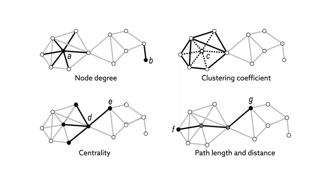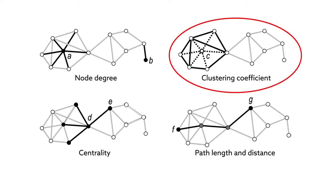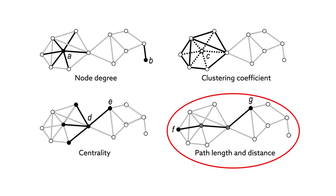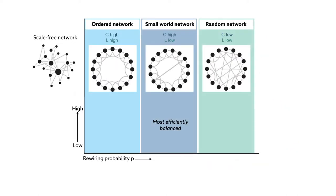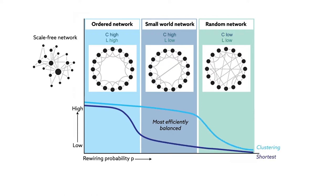Looking at these elements in the form of a two-dimensional map reveals key properties such as how nodes cluster together or the average number of edges needed to connect any two nodes. These relationships shed light on the linkages that exist between a system's parts and help reveal how dynamic interactions among these links generate emergent behaviors.